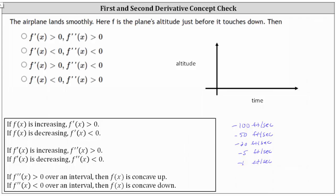So the correct answer is f prime of x less than zero and f double prime of x greater than zero. If we wanted to sketch the graph of the altitude for a smooth landing, we'd notice the altitude is decreasing because the graph goes down from left to right, which is why the first derivative is less than zero. But because the rate of decrease increases for a smooth landing, the graph is concave up, which is why the second derivative is greater than zero or positive.